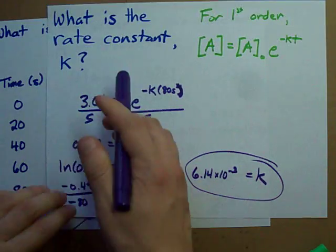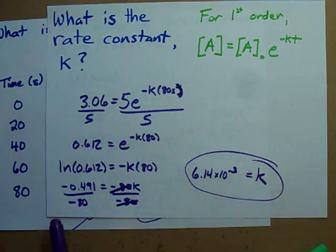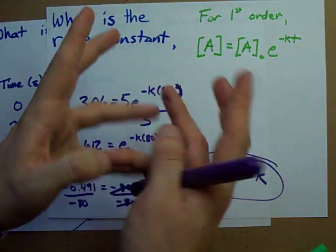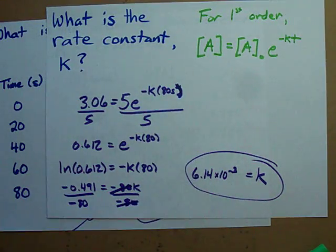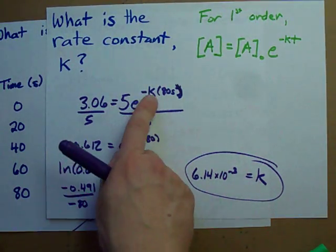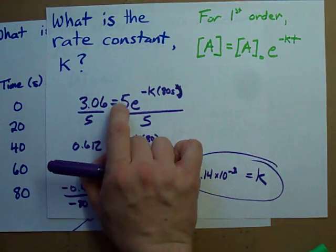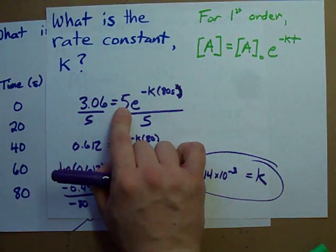Tricks to doing this question and finding the rate constant given a table of data. Know the rate law for the reaction, and you have to know the order of the reaction before you do that. Solve for K once you plug in some concentration and time data.